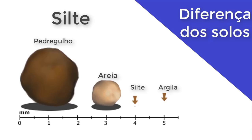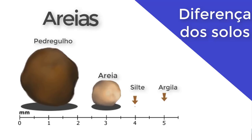O silt, em geral, faz a composição de outros solos. Por isso que ora ele se comporta como um solo, ora como outro. A partir daí, podemos partir para as areias, os solos arenosos.